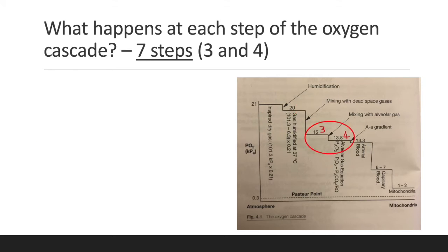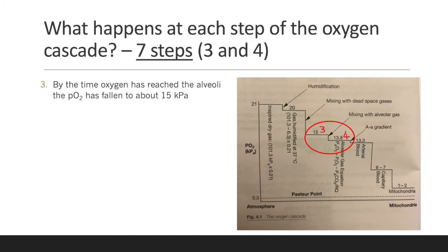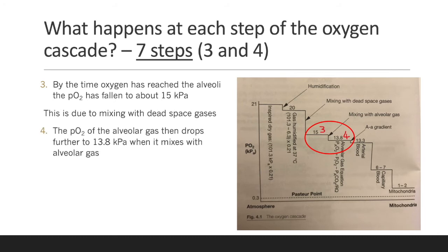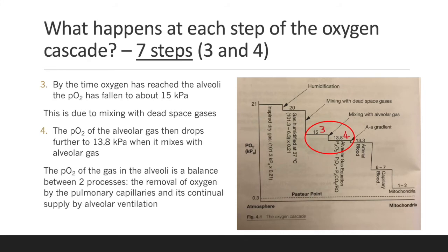Now we will look at steps 3 and 4. By the time oxygen has reached the alveoli, the PO2 has fallen to about 15 kPa due to mixing with dead space gases. The PO2 of the alveolar gas then drops further to 13.0 kPa as it mixes with alveolar gas. The PO2 of the gas in the alveoli is a balance between the removal of oxygen by the pulmonary capillaries and its continual supply by alveolar ventilation.